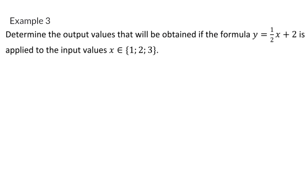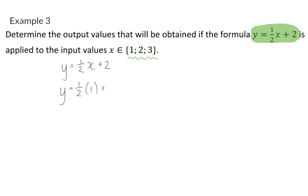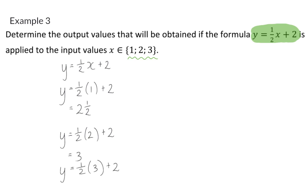Example three: determine the output values obtained if the formula y equals a half x plus two is applied to the input values x equals one, two, and three. The formula for output values is a half times the input value plus two. Substituting one gives a half plus two, which is two and a half. Substituting two gives three, and substituting three gives three and a half. So we can list our output values as two and a half, three, and three and a half.